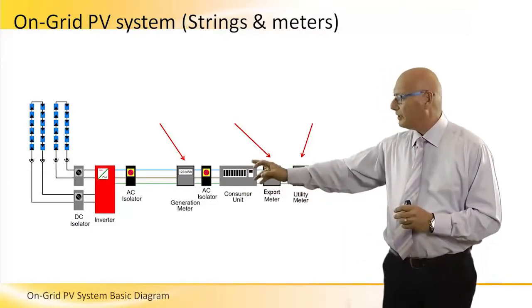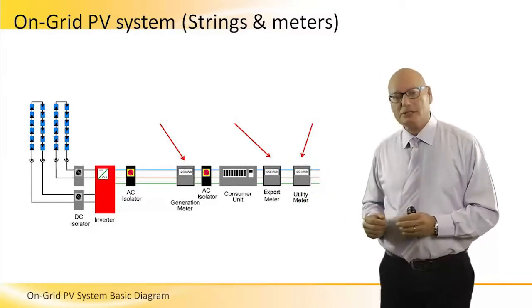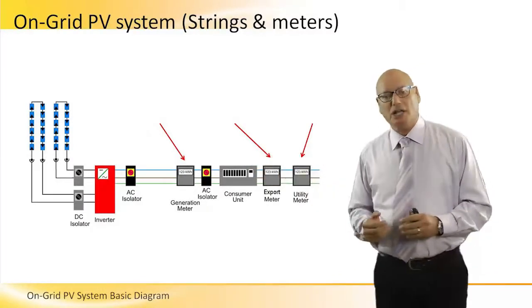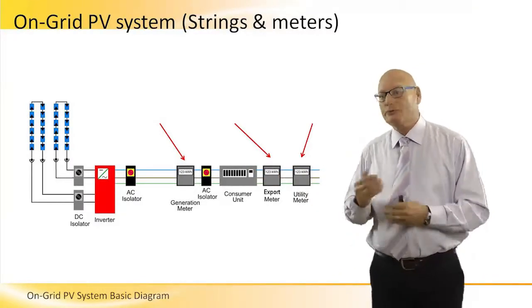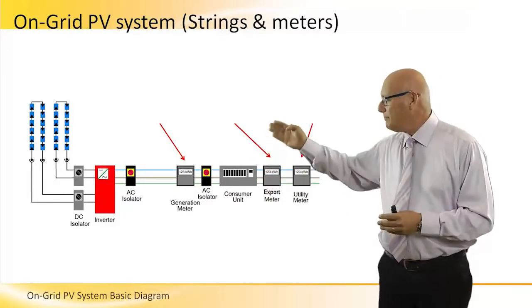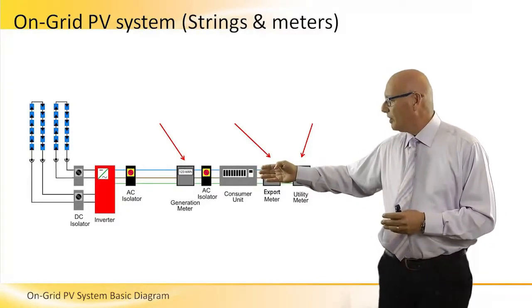This red box inverter receives DC from two strings in this case—this is just an example. The inverter receives the DC coming from the panels, converts it into AC, and there is an AC isolator immediately after the inverter.